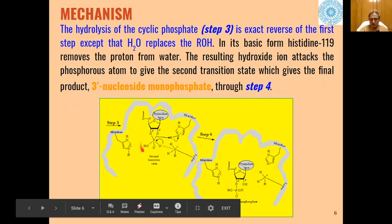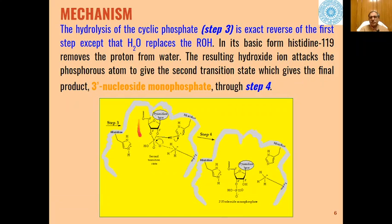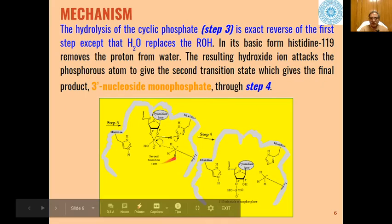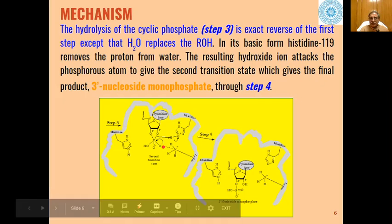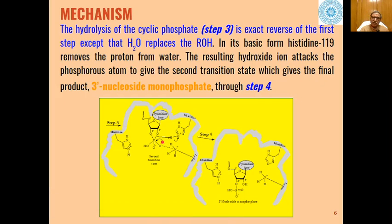Then this cyclic phosphate undergoes hydrolysis in the fourth step, when the basic form of histidine-119 removes a proton from water. The resulting hydroxide attacks the phosphorus atom to give a second transition state, in which the negatively charged oxygen forms a phosphorus-oxygen double bond.